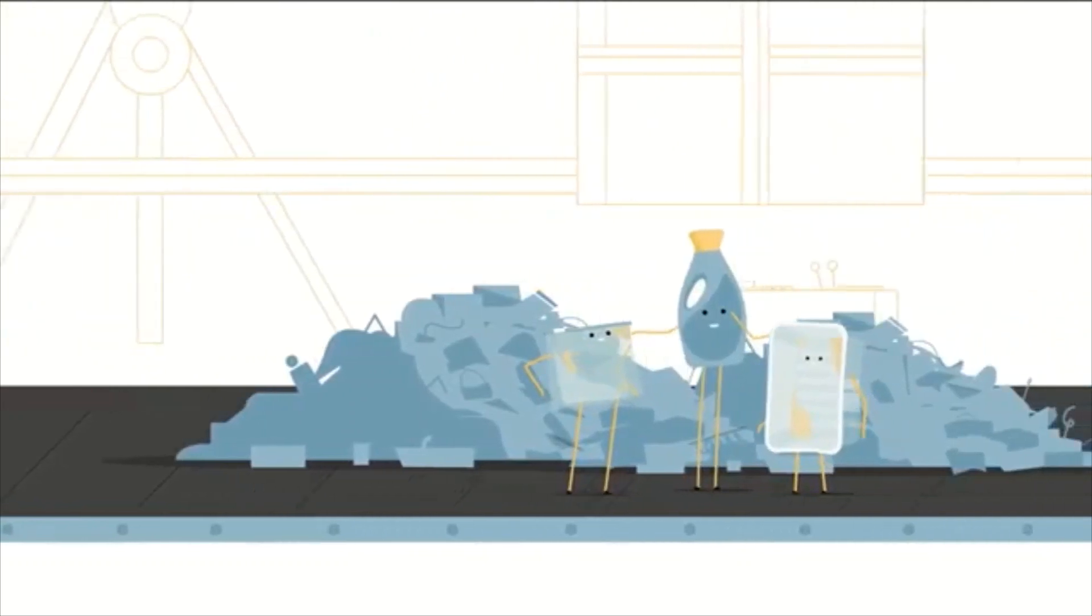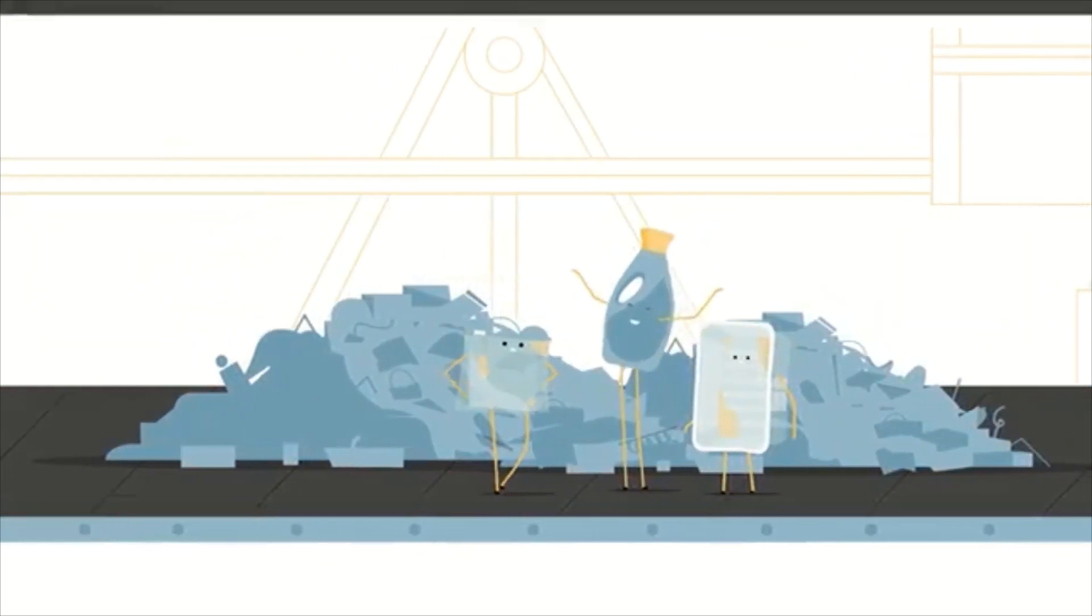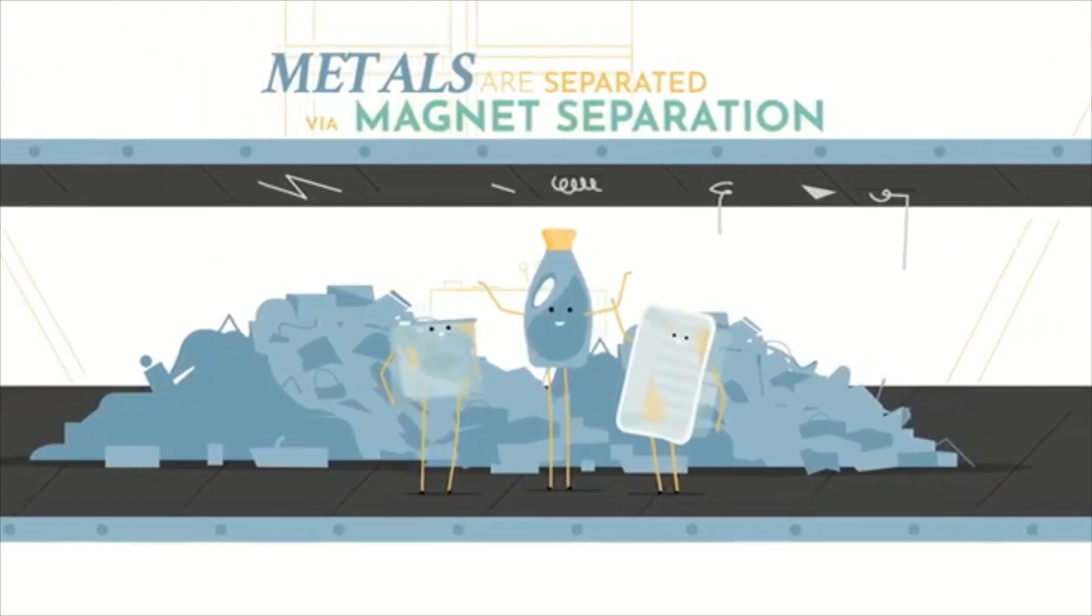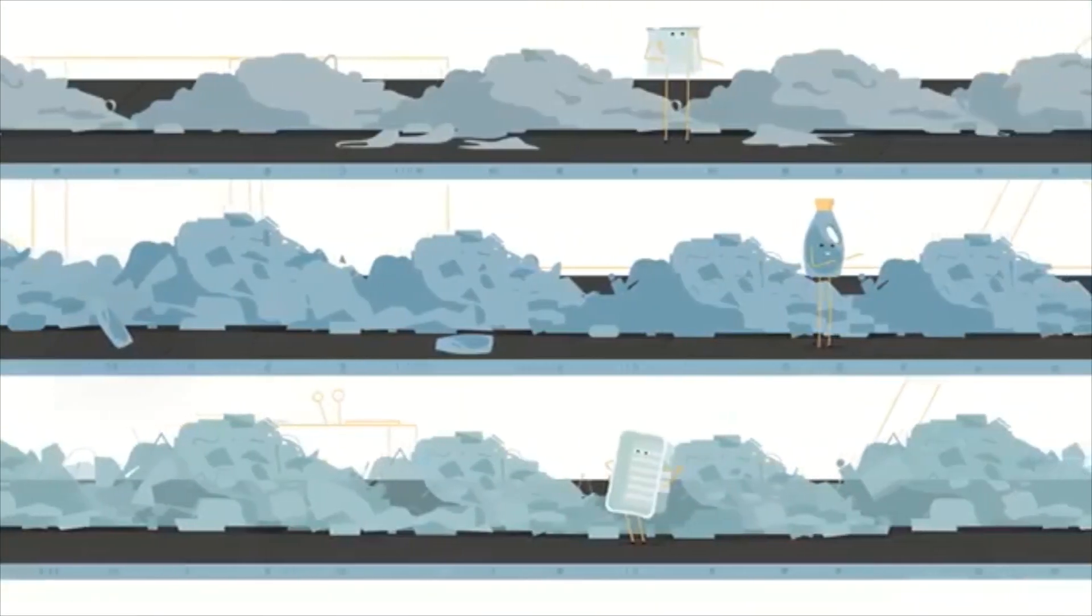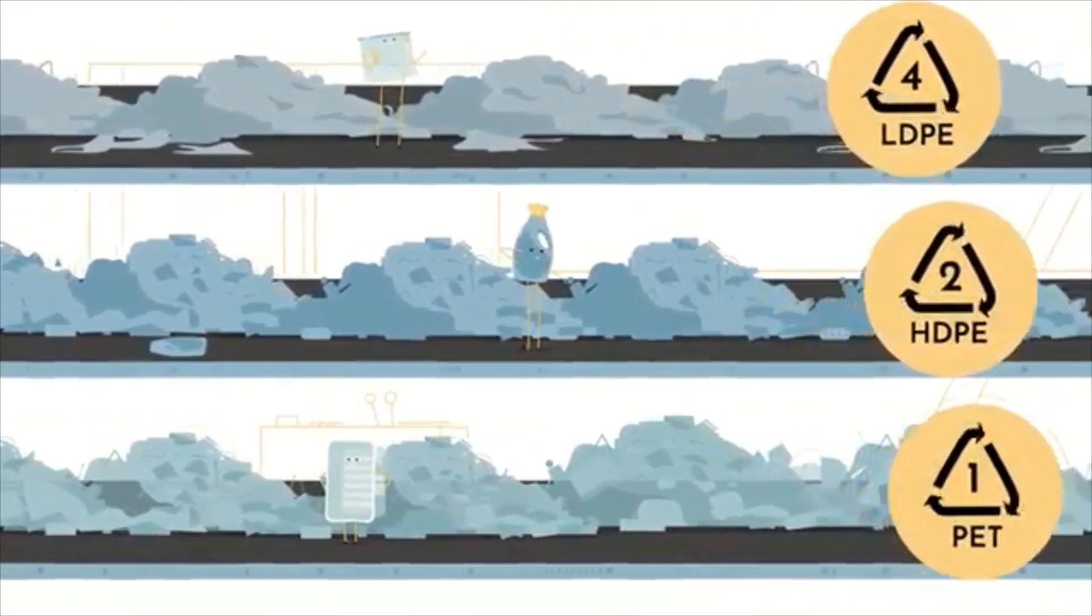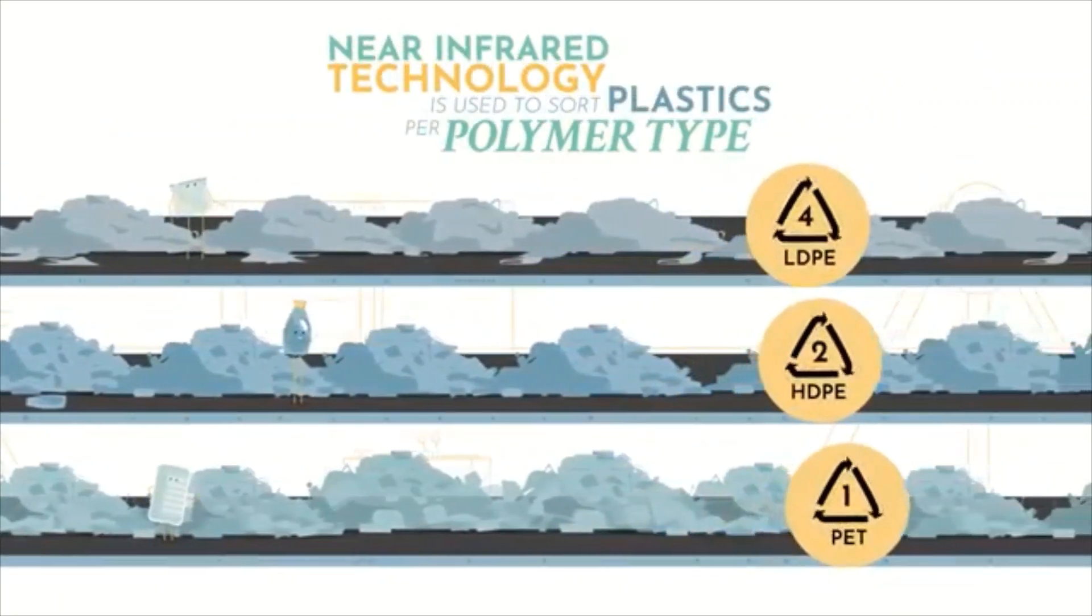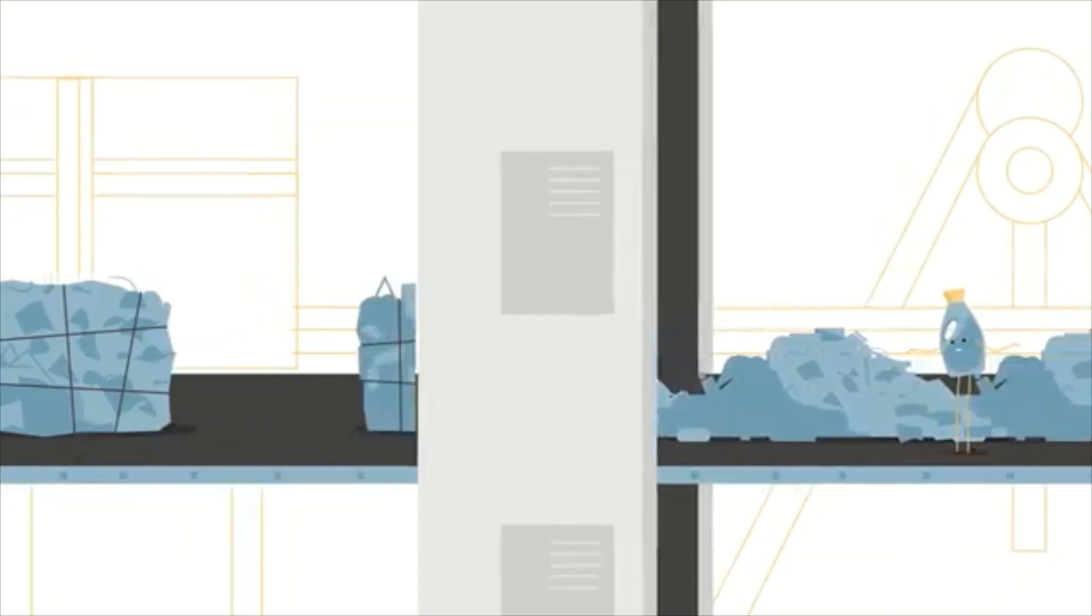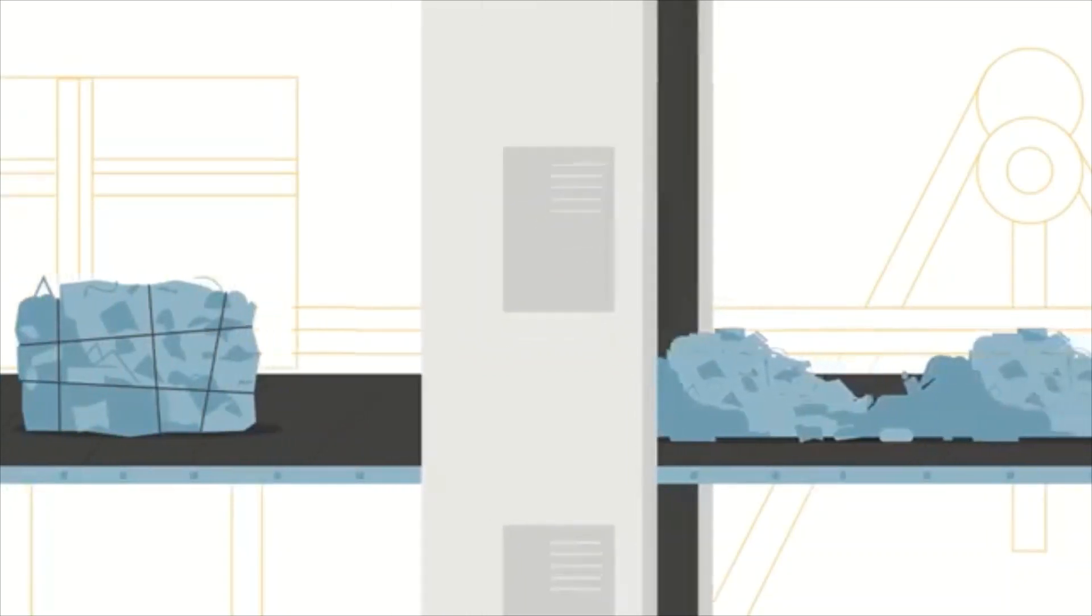We make a brief stop at the sorting centre before recycling. Plastics need to be separated from other materials like metals and sorted by different plastic types. Near-infrared technology is used to sort plastics per polymer type. After plastics are sorted, they are compressed into bales.